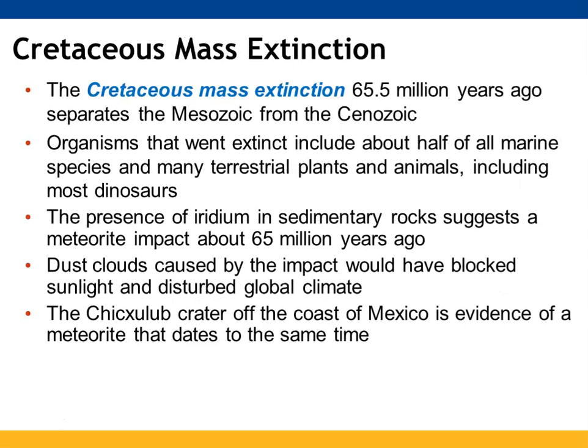The Cretaceous mass extinction was 65.5 million years ago, separating the Mesozoic from the Cenozoic. Several organisms went extinct, including about half of all marine species and many terrestrial plants and animals — this is when the dinosaurs went extinct. Iridium present in sedimentary rocks suggests a meteorite impact around this time. Dust clouds caused by the impact would have blocked sunlight and had a significant impact on global climate. A crater off the Mexico coast is evidence of a meteorite, and data from that location dates it to that time period.